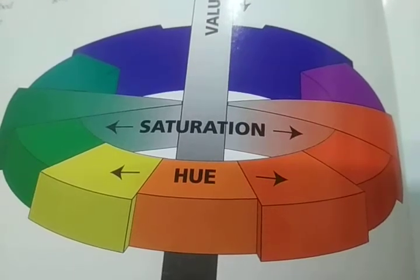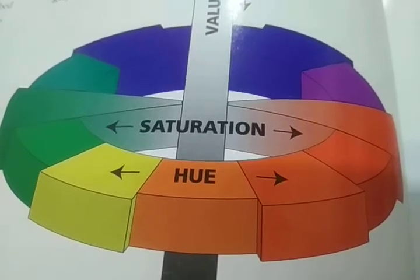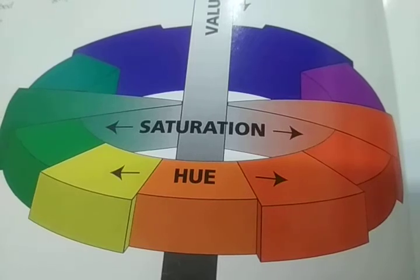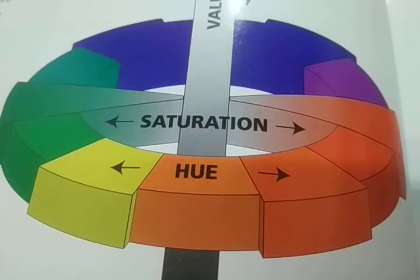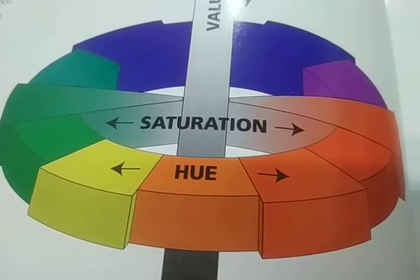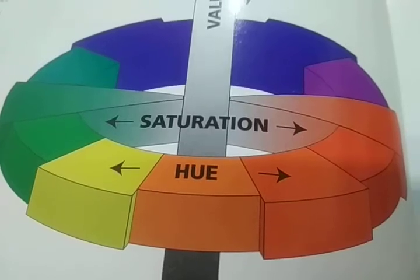So to summarize: red, yellow, and blue are the primary colors; green, orange, and violet are the secondary colors; and when you mix two secondary colors, you get a tertiary color.